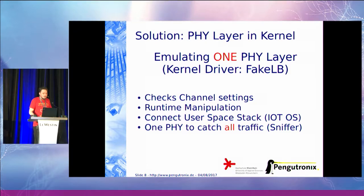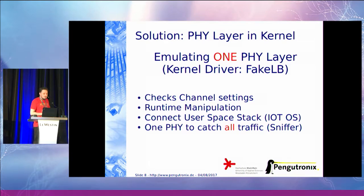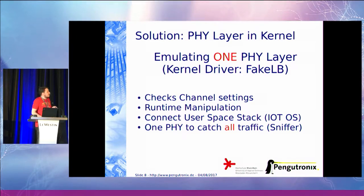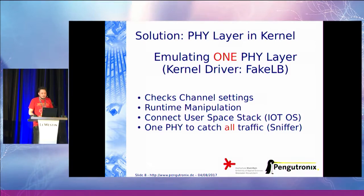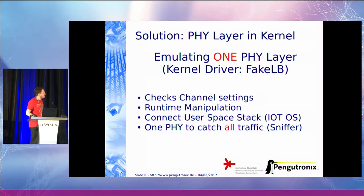My solution is to provide a PHY layer in the kernel that emulates one PHY layer, so all 802.15.4 stacks use it to make a mesh network. The kernel driver is called 'fake LB'. I'm not the author of this driver, but when I describe it, the wireless people - by wireless I mean 802.11 - they said 'hey, do you know hwsim?' And yes, this driver works exactly like hwsim. I will really need to rename the driver because I always need to explain that I know hwsim and it works exactly the same.